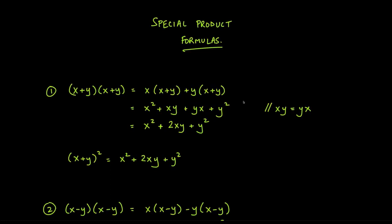Before we start using the formulas, let's see where they come from or how we can derive them so we can avoid mistakes in the future. The very first one is for (x + y) squared. We can write x + y twice, because a squared term means it's being multiplied by itself — so (x + y) times (x + y).